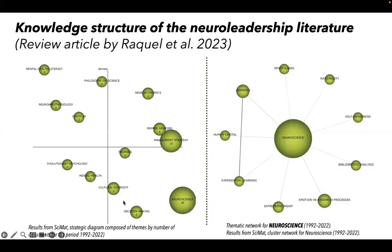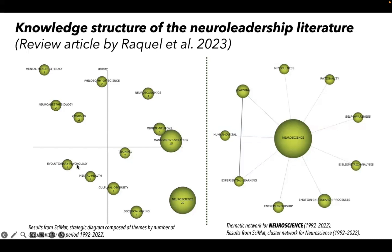These are examples of a strategic diagram and a thematic network from a research review article by Raquel et al. 2023 about neuroleadership literature, which refers to incorporating neuroscience concepts into leadership. In this diagram, terms like neuroeconomics and mirror neurons are considered motor themes. Neuroscience and decision making might be basic themes that haven't been as developed but are central to that field. Fields like evolutionary psychology and mental health might not be as developed and are not quite central to the field either.